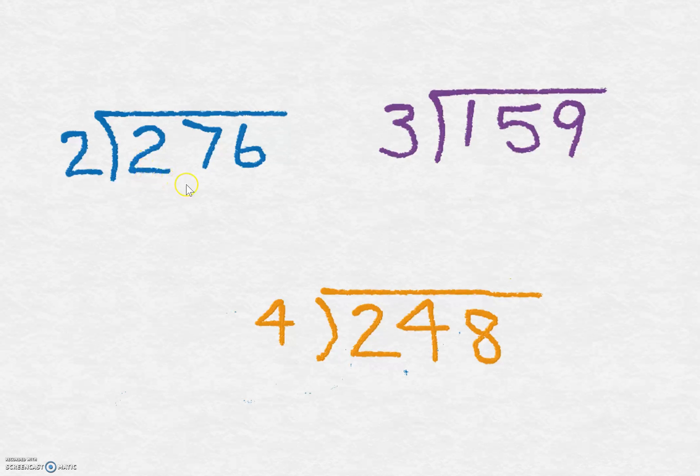So first of all, we've got 276 divided by 2. 2 divided by 2 equals 1, because 1 times 2 equals 2. Then we've got 7. 7 divided by 2 is 3, because 3 times 2 is 6, plus 1 left over. This here becomes 16. 16 divided by 2 equals 8.